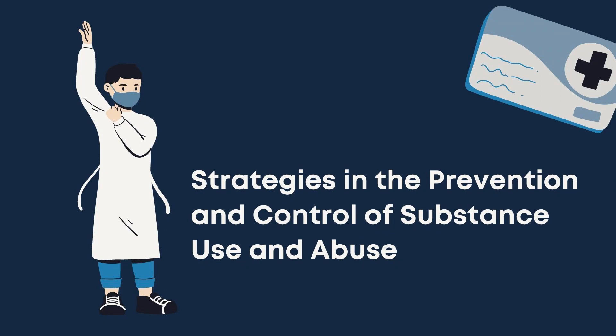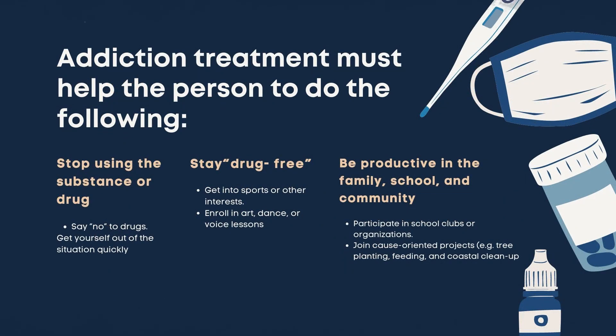So what are the different strategies in the prevention and control of substance use and abuse? Addiction treatment must help the person to do the following. First is to stop using the substance or drug — say no to drugs and get yourself out of the situation quickly. Second is to stay drug free, by getting into sports, other interests, or enrolling in art, dance, or voice lessons. Third is to be productive in the family, school, and community by participating in school clubs or organizations and joining cause-oriented projects such as tree planting, feeding, and coastal cleanup.